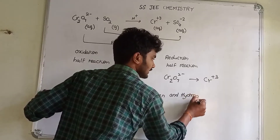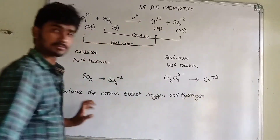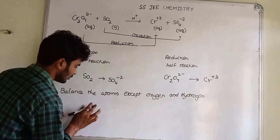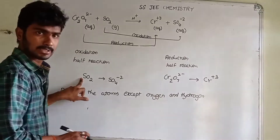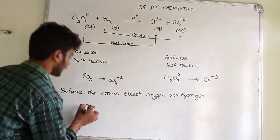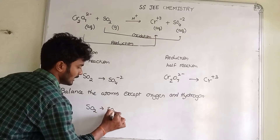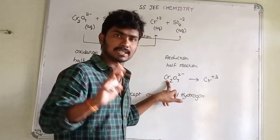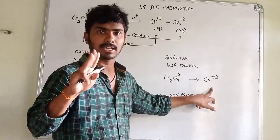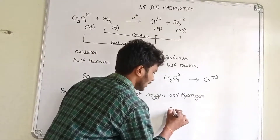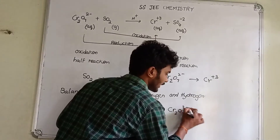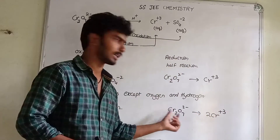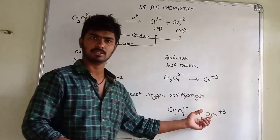Now we are going to balance the mixture of oxygen and hydrogen. SO2 gives rise to SO4²⁻. Next, we need to get the Cr balanced with chromium. Here we have two Cr on the left, so we need 2Cr³⁺ on the right — you need 2Cr plus 3. Here we have 2Cr.